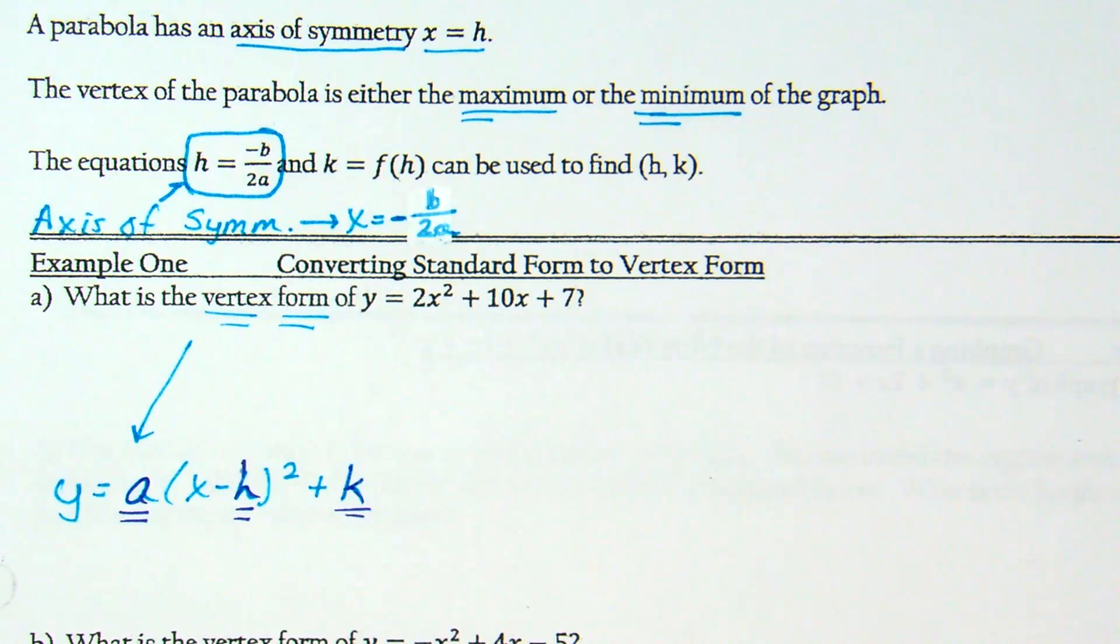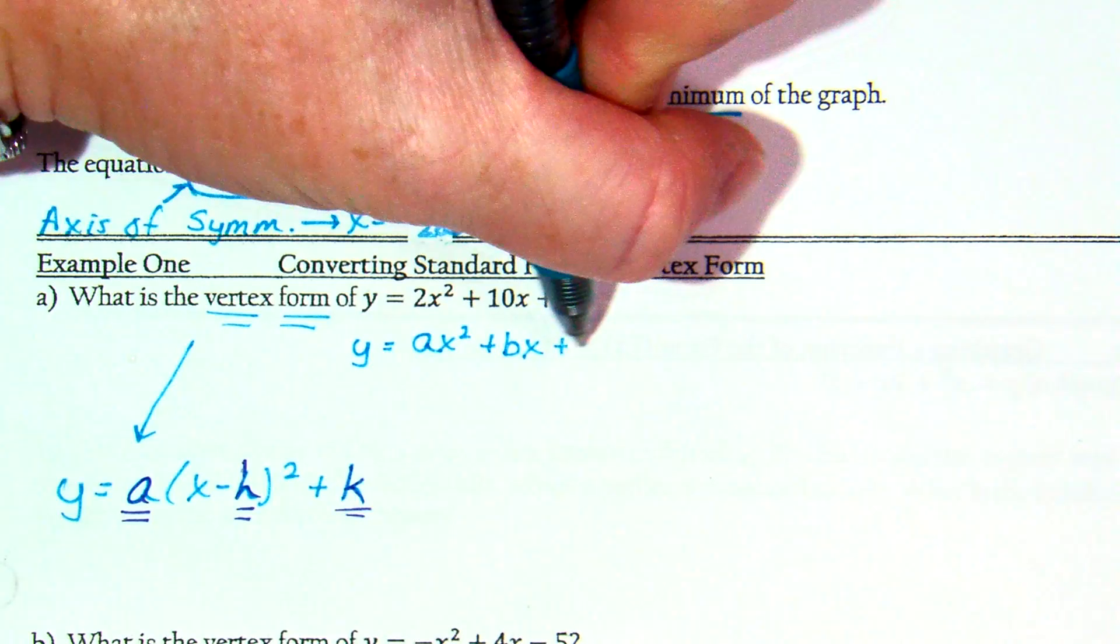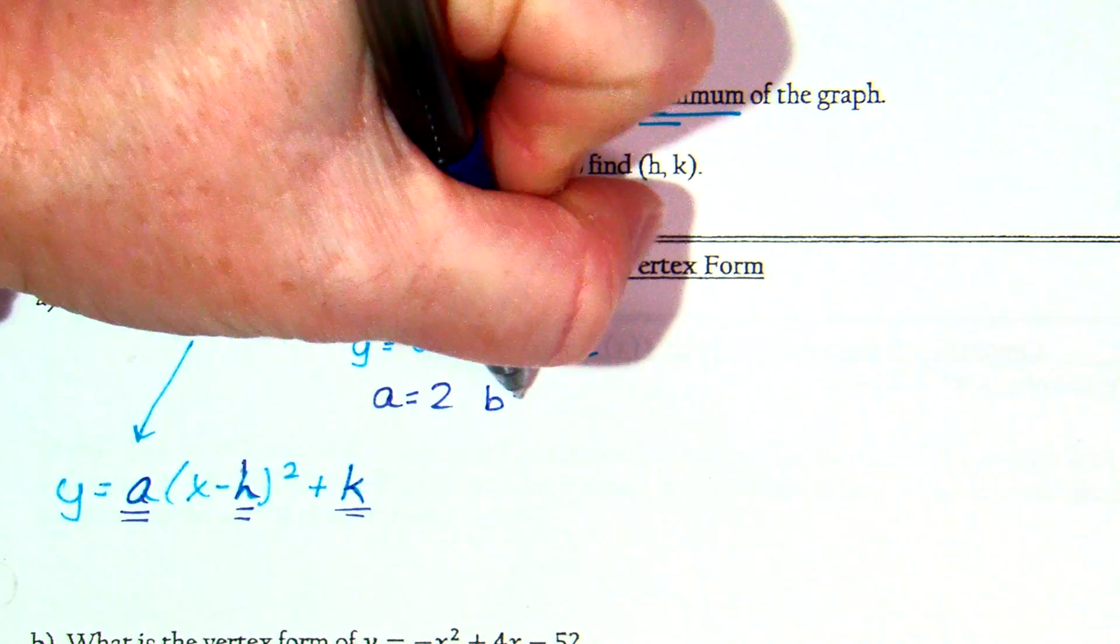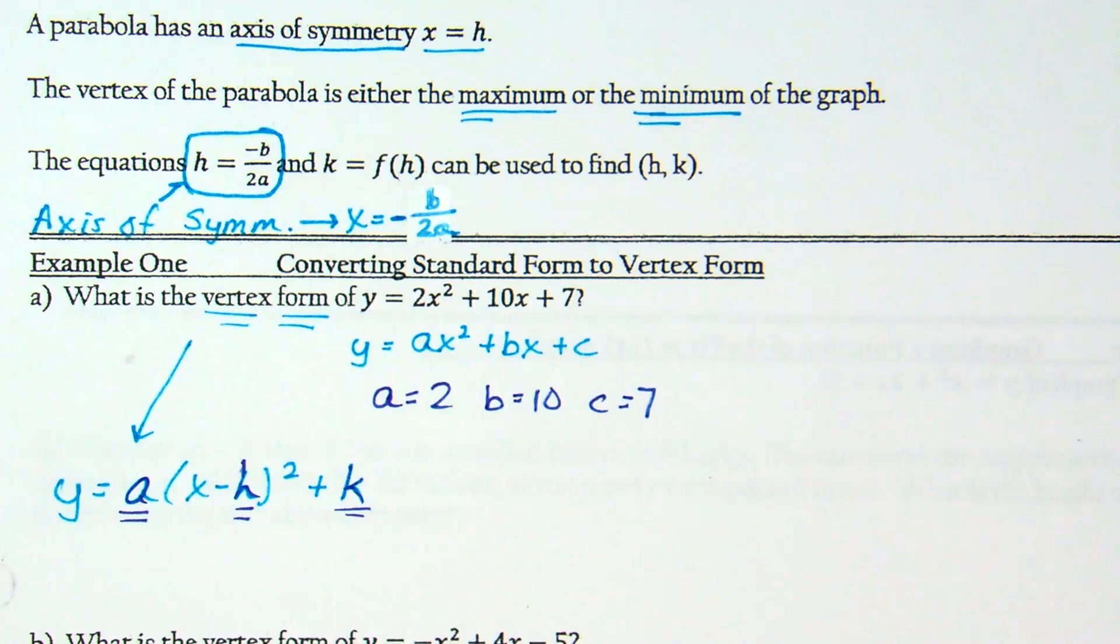What form is given there? That 2x squared plus 10x plus 7 is our standard form. Standard form is A x squared plus B x plus C. Can you guys identify your ABCs? What's A? The number in front of x squared is 2. What is B? 10. And what is C? 7.